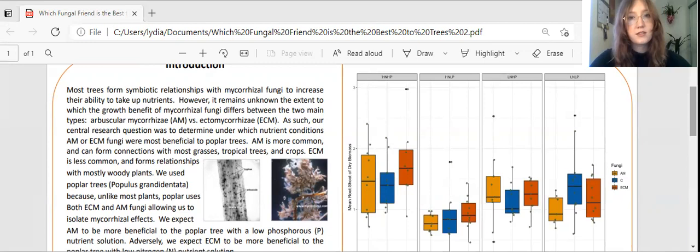Our hypothesis is that AM will be more beneficial in low phosphorus soils and ECM will be more beneficial in low nitrogen soils.